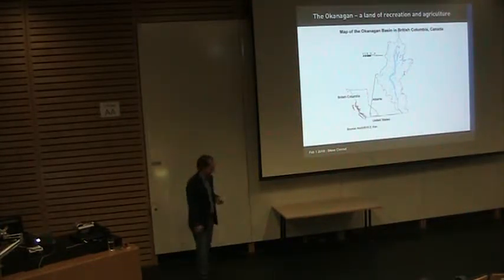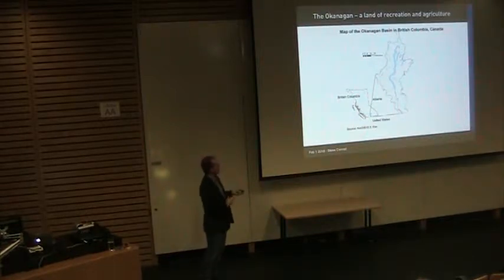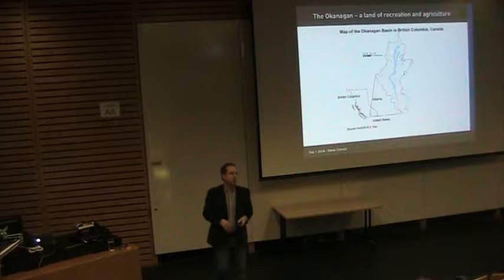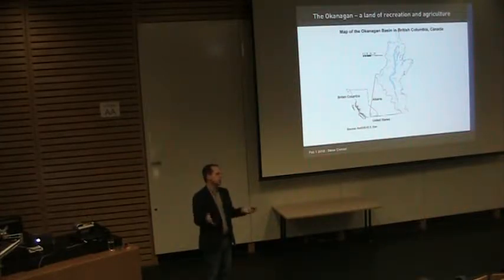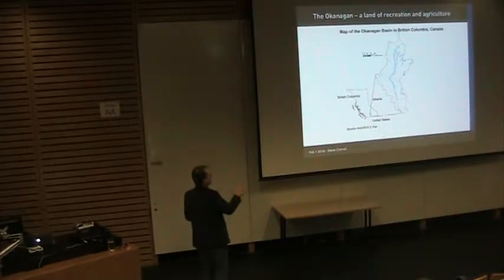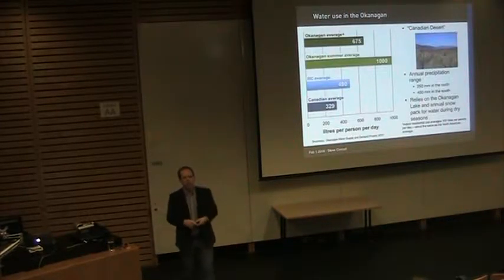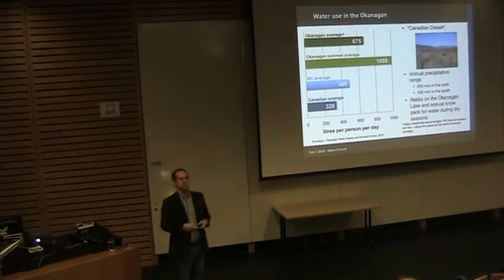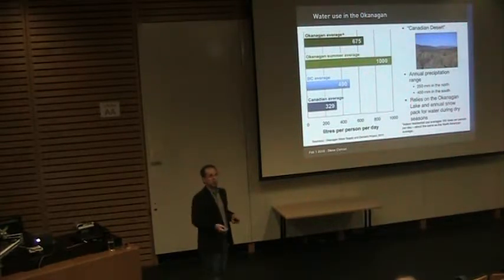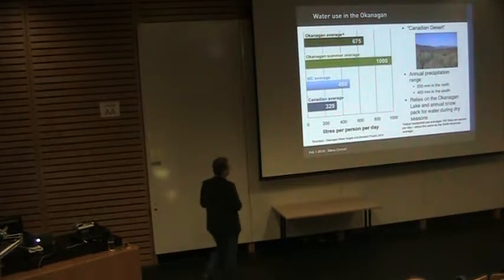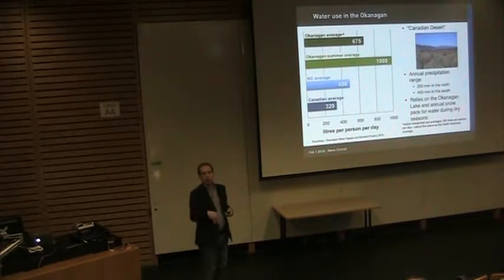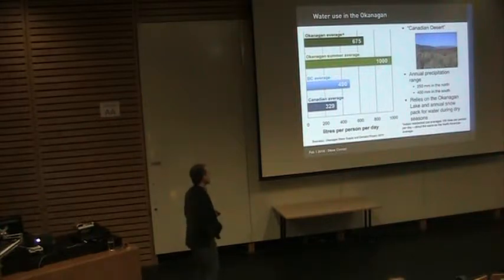The Okanagan water basin is part of the larger Thompson-Columbia River Basin, in the central-south part of British Columbia. It has one of the longest lakes in Canada, but the Okanagan is also one of the most arid regions in Canada — in fact, depending on the year, it is the most arid region, with the least precipitation and the lowest quantity of available water.